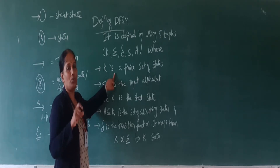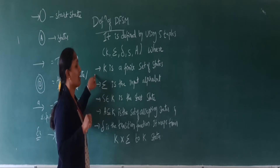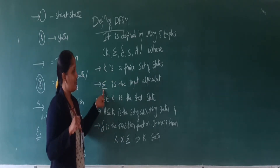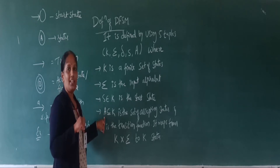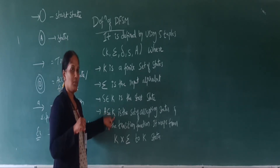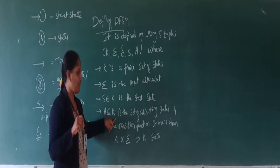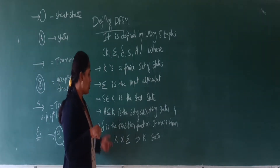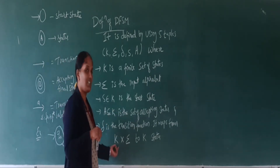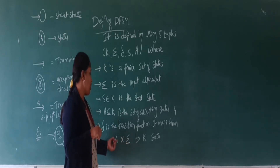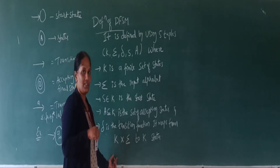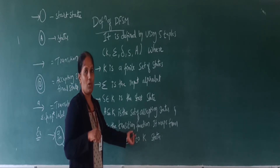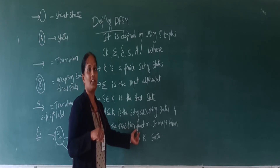Σ is the input alphabet. S is one of the states called the start state. A is a subset of K — one or more states that are the final states in a DFSM. δ is the transition function, which is mapped by taking a state and the input symbols. You draw a transition table considering the states in the DFSM and the input symbols, where row values are the states and column values are the input symbols, mapping each state with the input symbols.